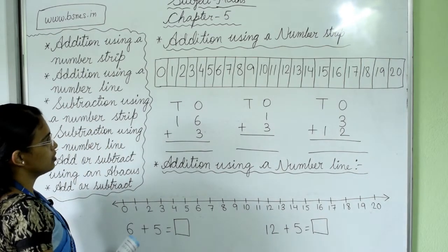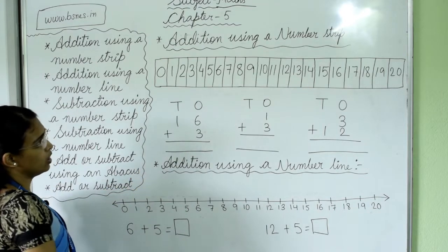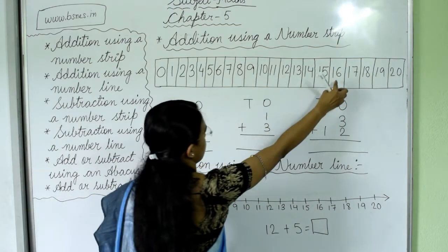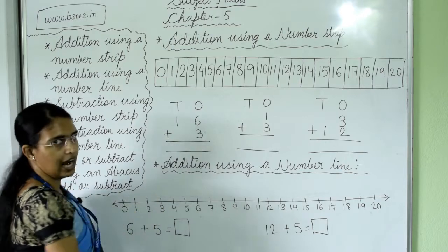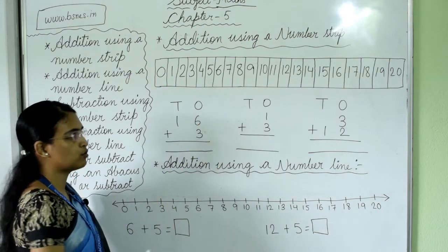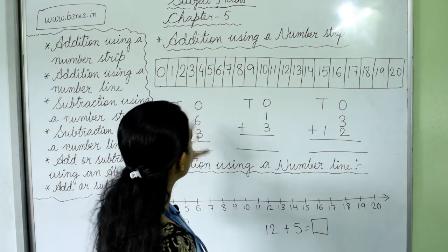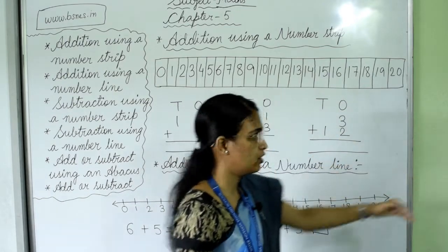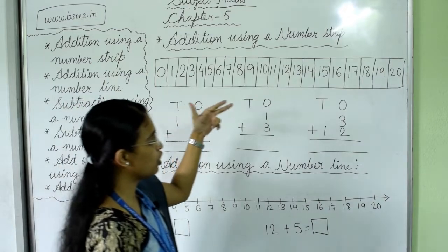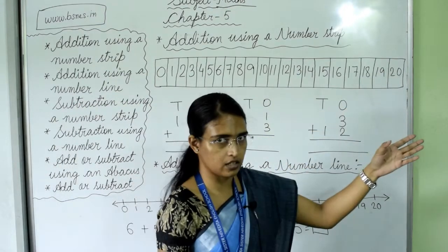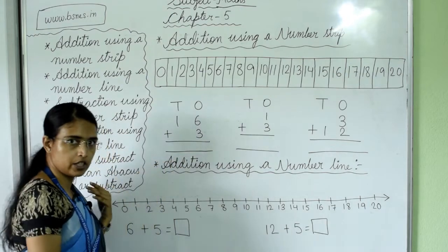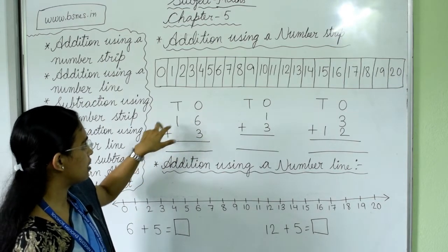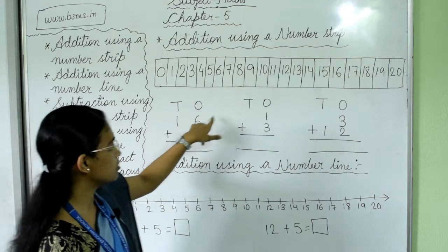When you are doing addition, you have to find out the first number. The first number is 16. We have to add 3. In addition, we have to go forward — forward means this direction, and backward means this direction. So we will go forward. First question is 16 plus 3.